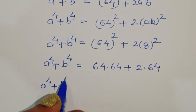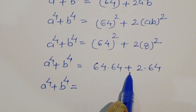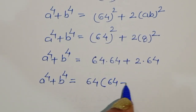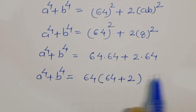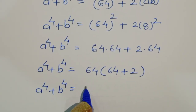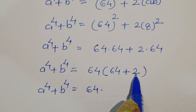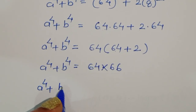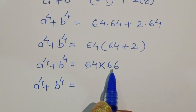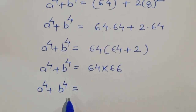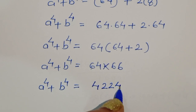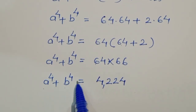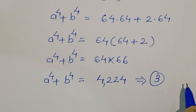Now 64² = 64 × 64, and 2 × 8² = 2 × 64 = 128. Factoring out 64: a⁴ + b⁴ = 64 × (64 + 2) = 64 × 66 = 4224. This is equation 3.